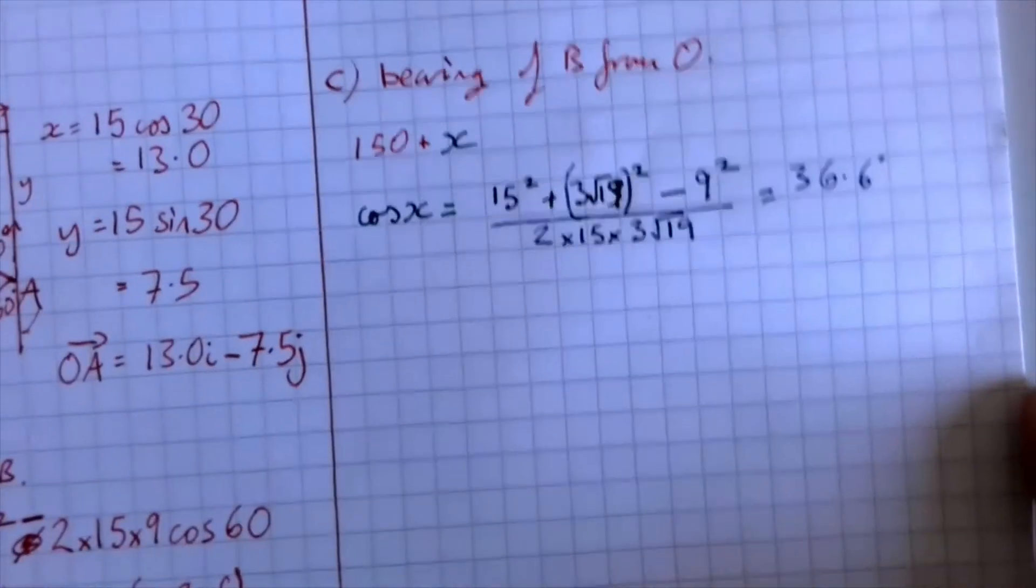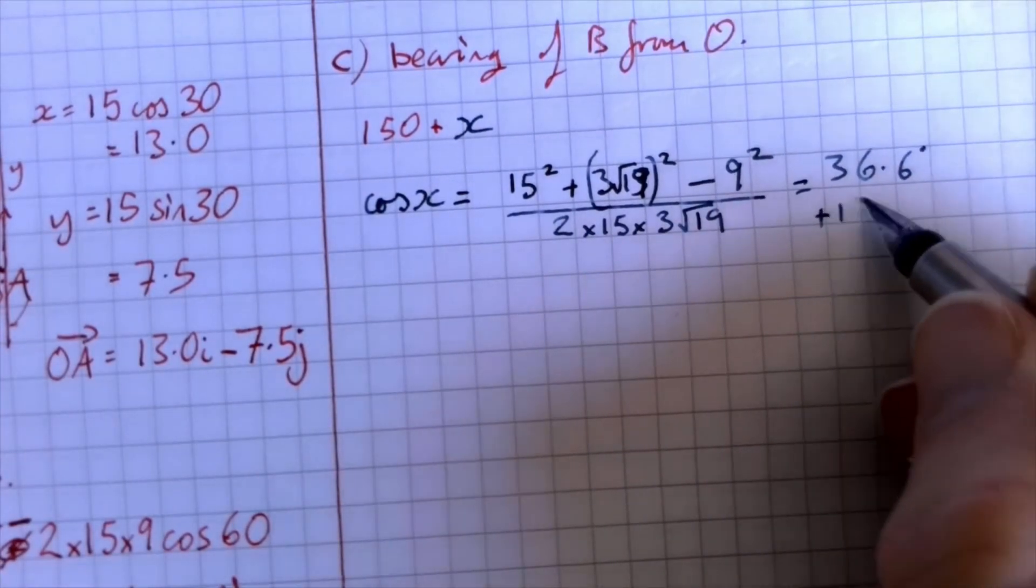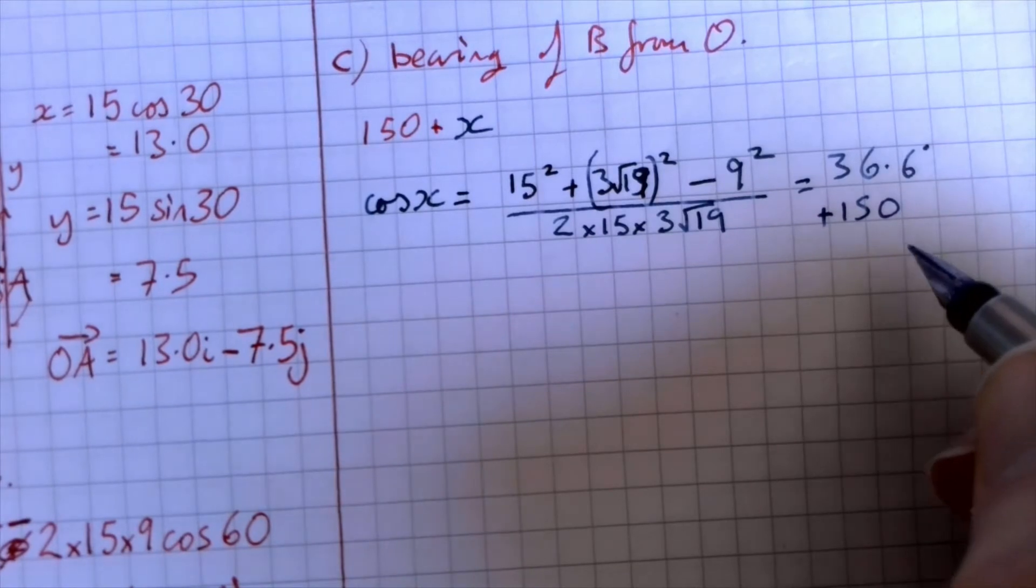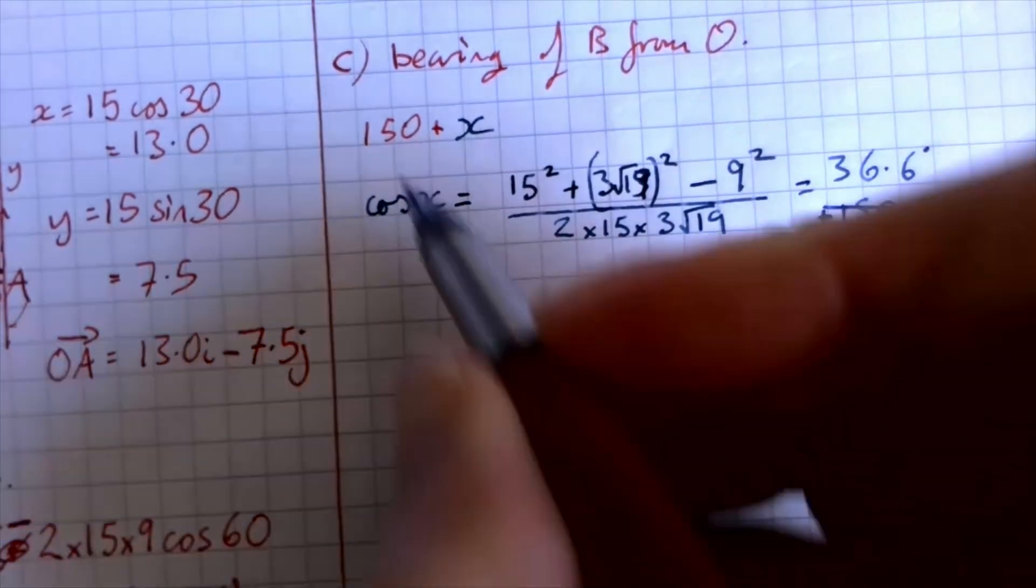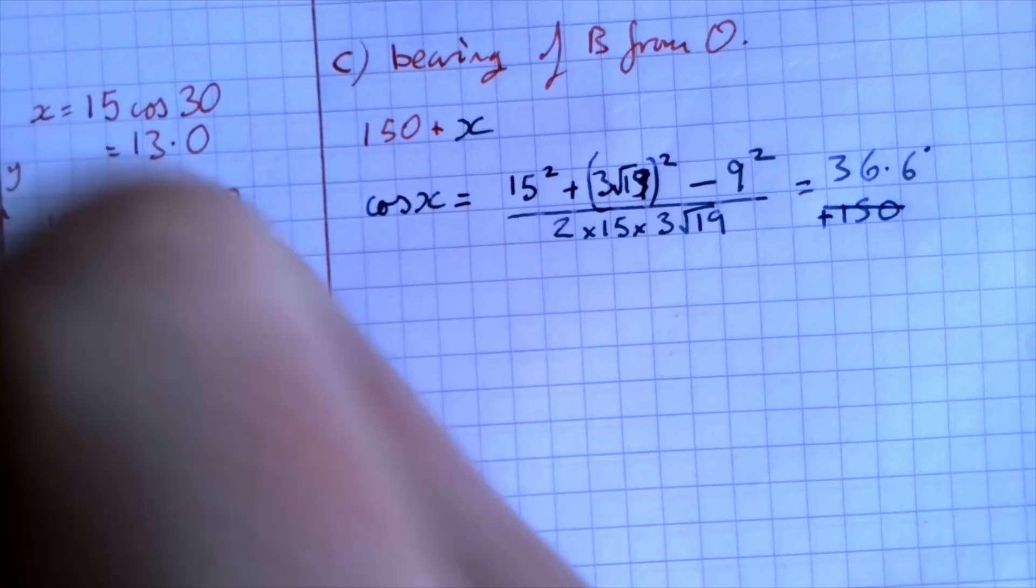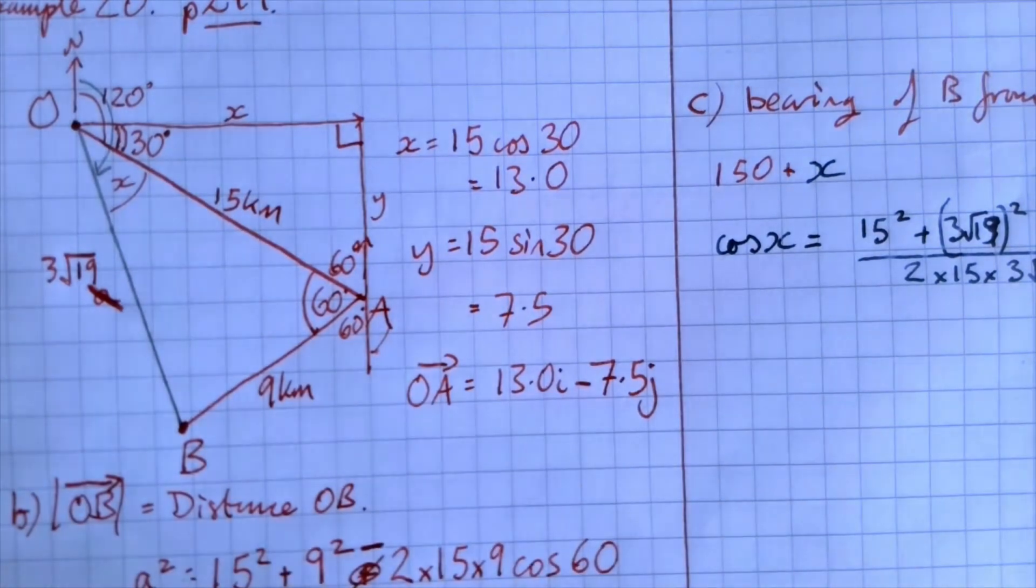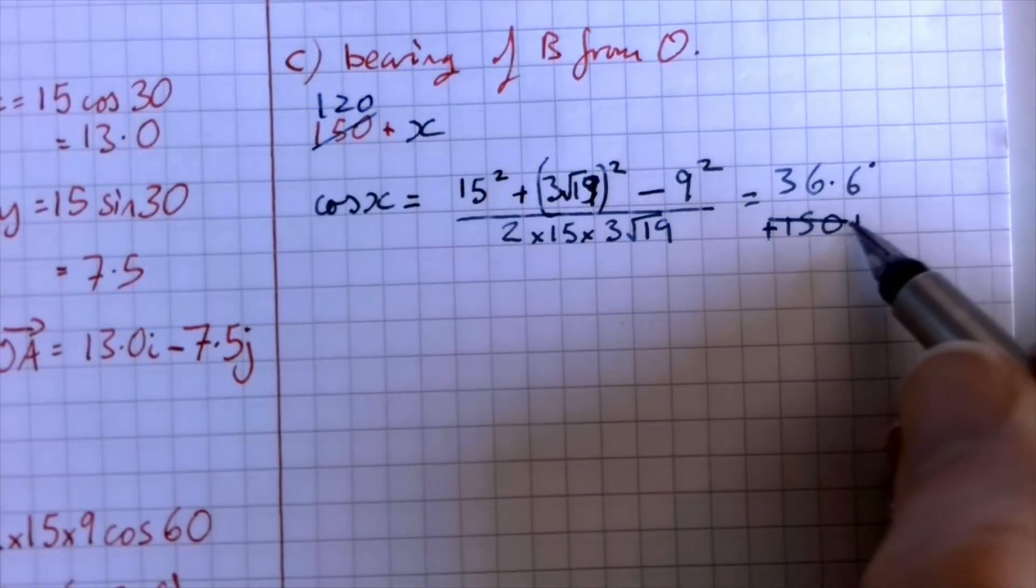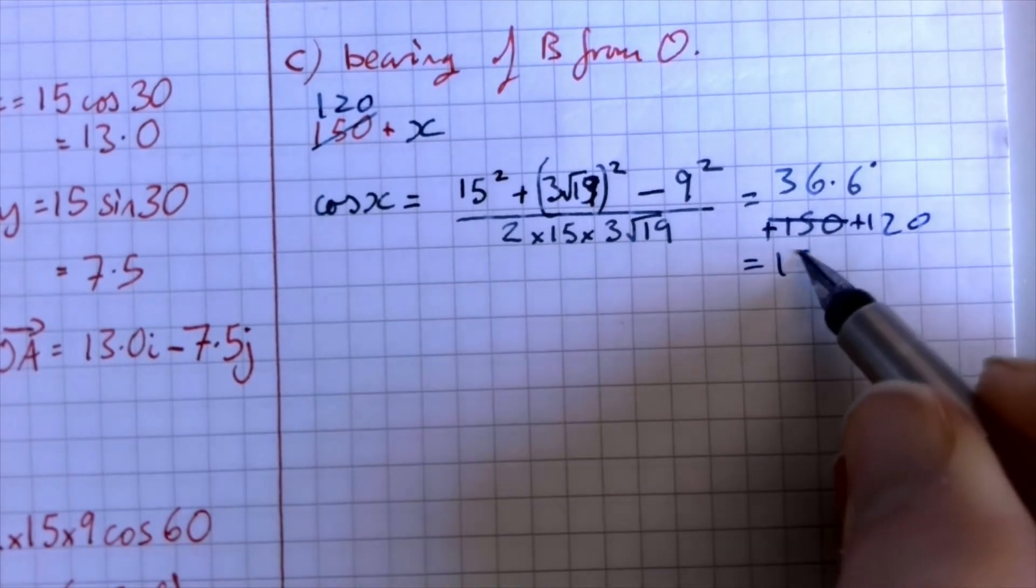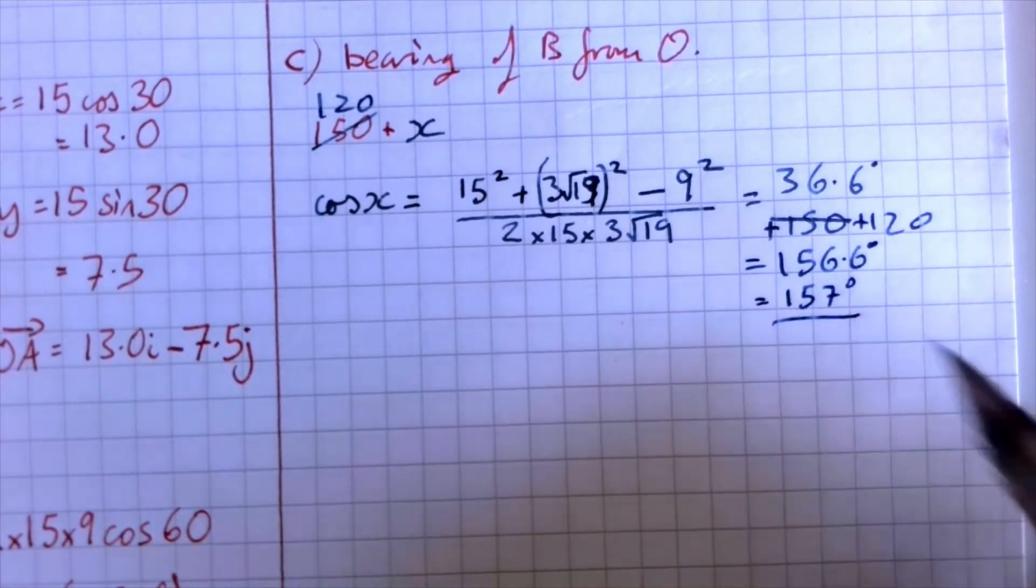And I want the bearing, so I'm going to be adding 150. No, I'm not. I'm going to be adding 120. It's not 150. I hope you spotted that earlier. That 120 was encompassing the 30 degrees over here. And this is because I'm all looking on one diagram. Probably would have been better for me to draw it out again separately for each question, for each part of the question. So that would be 120. So adding 120 gets me 156.6 degrees, which as a bearing is going to be 157 degrees.